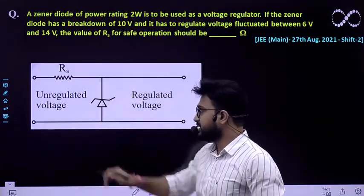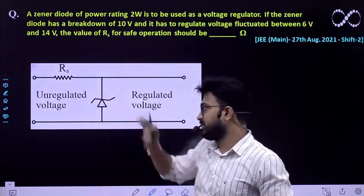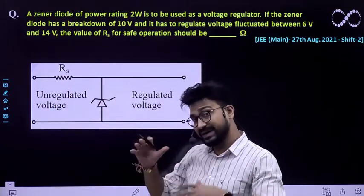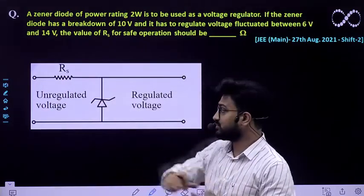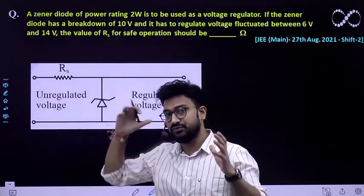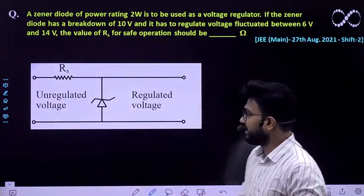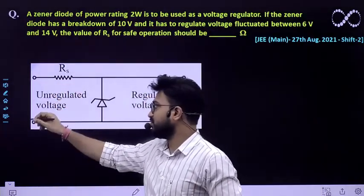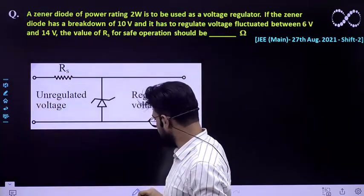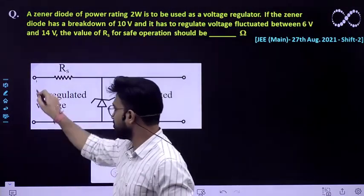So for safe operation the maximum voltage it has to regulate is 14 volt. So we will be considering that situation at which the unregulated voltage is 14 volt. If 14 volt of voltage has been applied over here.